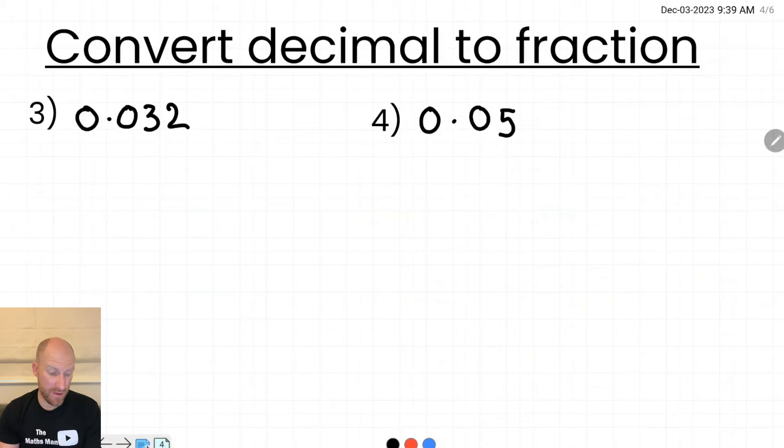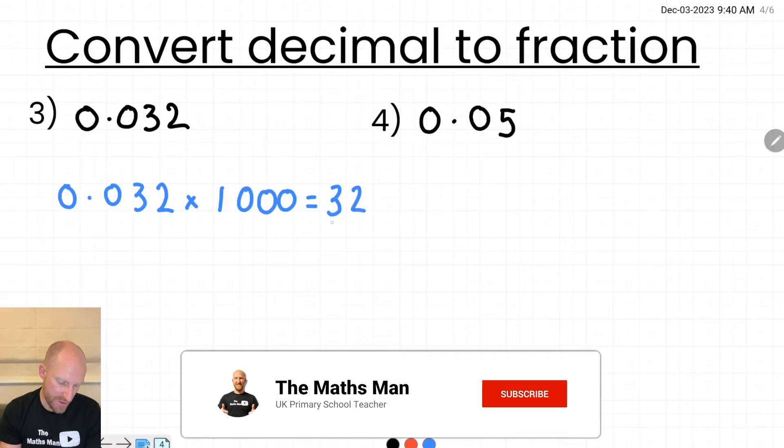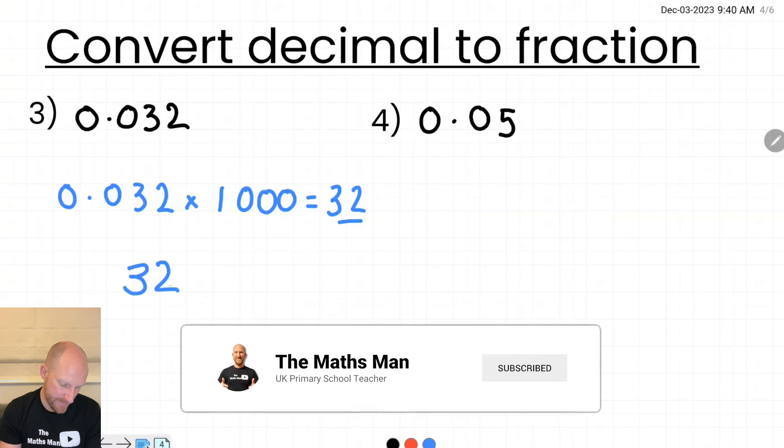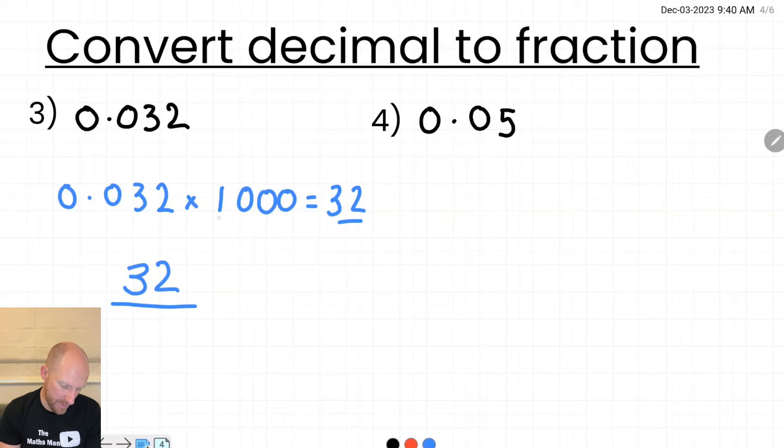Okay now let's take a look at an example that has three decimal places. So we have 0.032. So this time I'm going to multiply it by 1000 because that will change the number into 32. So the 32 will become my numerator and the 1000 will become my denominator. So 0.032 is 32 thousandths.